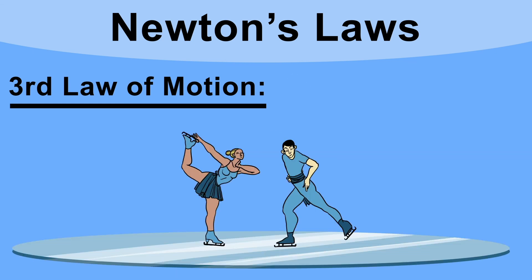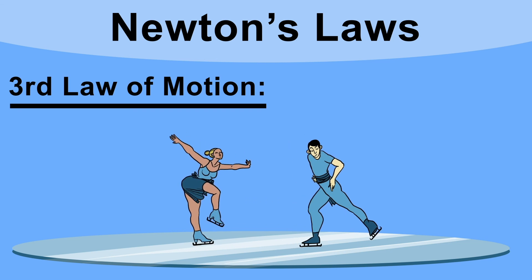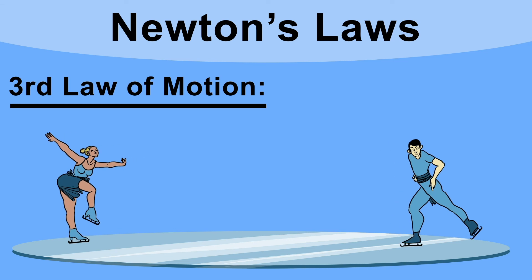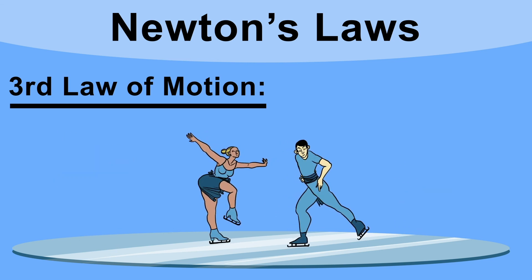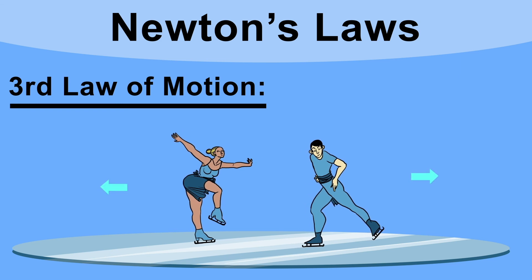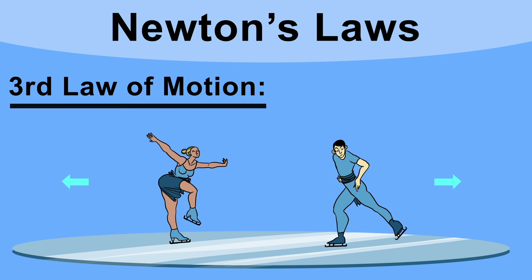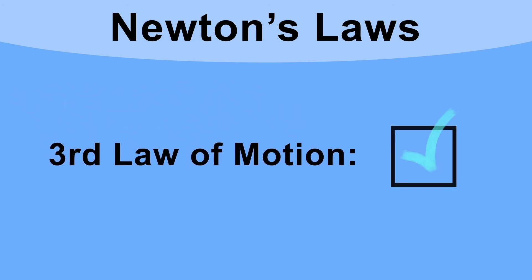Another example: two ice skaters of equal mass standing facing each other. The skater on the left pushes the skater on the right, but they both move off in opposite directions. This is because the skater on the left experienced an equal and opposite reaction force and was pushed back as well. That is Newton's third law of motion.